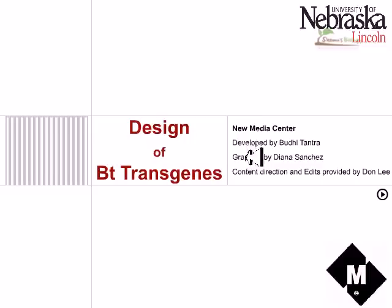Welcome, friends. In this video we will be looking at how to design BT transgenes. For any kind of gene, we must know there are two regions: one is the promoter sequence, which regulates the synthesis or transcription of the mRNA and the production of proteins, and the second is the gene of our desire.